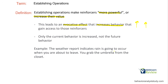For example, the weather report indicates rain is going to occur when you're about to leave. You grab the umbrella from the closet. The weather report has increased the value of opening the closet, getting the umbrella, and you're temporarily engaging in these behaviors. Tomorrow, if there's no rain, there's no reason to grab the umbrella. Now, how do you differentiate between an SD and an MO? If the umbrella is always in the closet, you can go grab it at any time. Only once the weather report increases the value of doing so will you actually grab the umbrella.